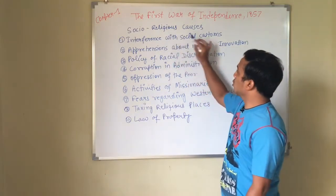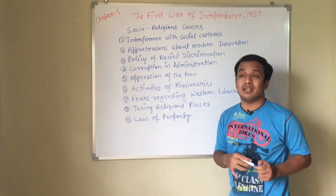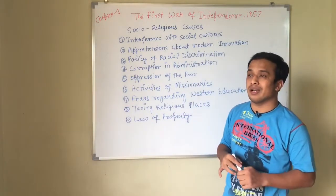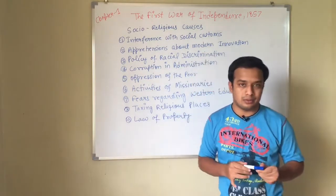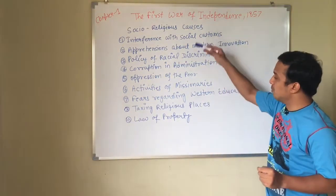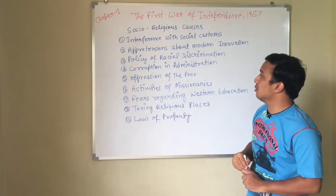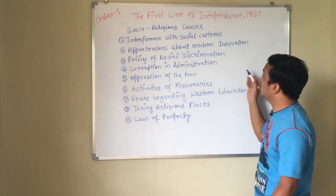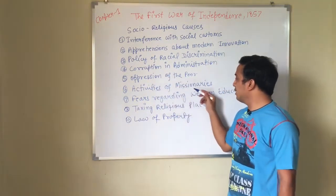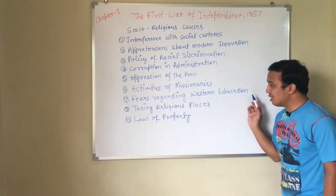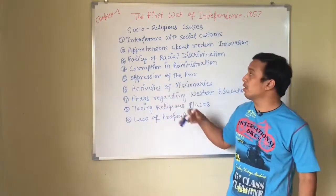Next we are going to study about the social-religious causes of the First War of Independence. Basically, the interference of the Britishers in the social-religious matters of the Indians led to widespread anger amongst Indian society. The social-religious causes are: interference with social customs, apprehensions about modern innovations, policy of racial discrimination, corruption in administration, oppression of the poor, activities of the missionaries, fear regarding western education, taxing religious places, and law of property.